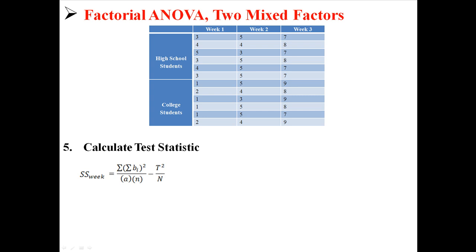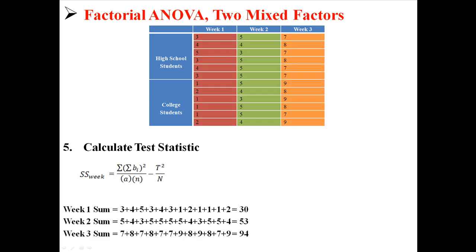Next, we do week, which is the same idea — A and B are now flipped around, but otherwise it's the same. We split up the three week conditions and find the sums: 30, 53, and 94. Those go on top of our equation: 30 squared plus 53 squared plus 94 squared. The rest is the same as before, and we find a sum of squares for week of 175.17.